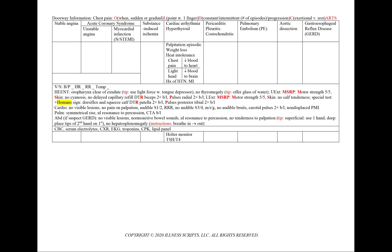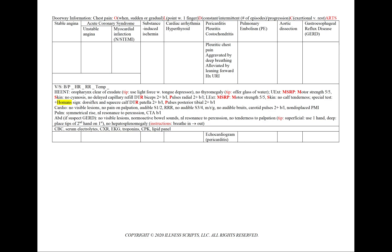We'll add a Holter monitor and a TSH-T4. In pericarditis, pleuritis, or costochondritis, supporting points can include pleuritic chest pain aggravated by deep breathing and alleviated by leaning forward. The patient could have a history of a recent URI. We will add an echocardiogram.